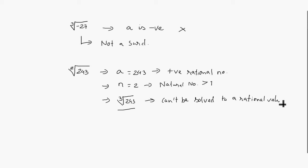That is, square root of 243 is irrational. Also, cube root of 243 is irrational. So in both cases we can say they are irrational and it is a surd. Square root of 243 is a surd.